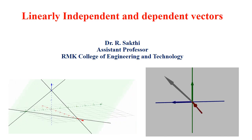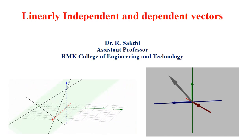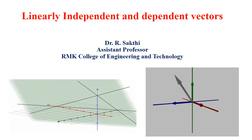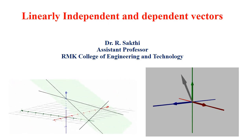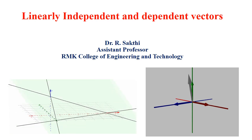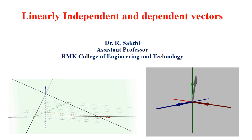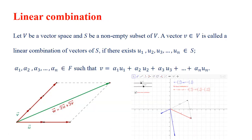Hello students. In this presentation we are going to see what is a linearly independent vector and linearly dependent vector. Before that, we shall see what is a linear combination of vectors. Let V be a vector space over a field F.